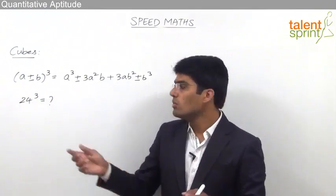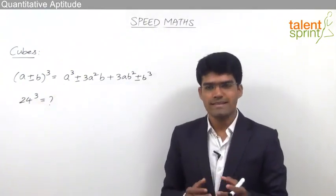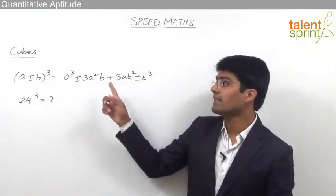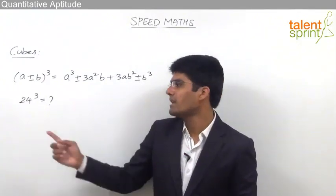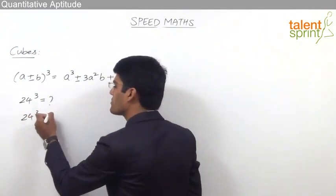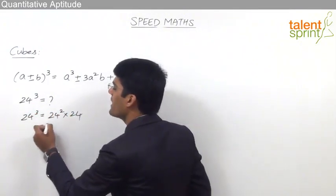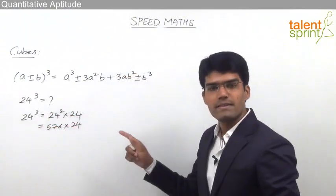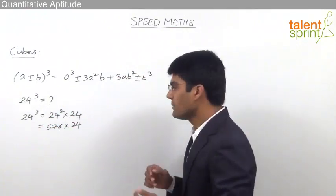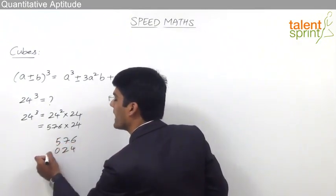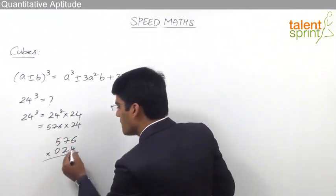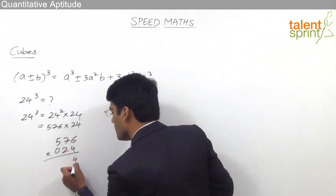Instead, there are two different methods for finding cubes. The first is the regular procedure: for example, 24 cube is nothing but 24 squared into 24. We know that 24 squared is 576, so 24 cube is 576 into 24. Using a multiplication technique for three-digit by two-digit multiplication: 4 into 6 is 24, so we write 4 and carry 2 forward.